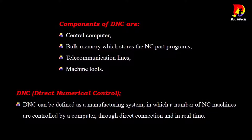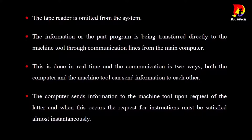DNC — direct numerical control — can be defined as a manufacturing system in which a number of NC machines are controlled by a computer through direct connection and in real time. The tape reader is omitted from the system. The information or the part program is being transferred directly to the machine tool through communication lines from the main computer.